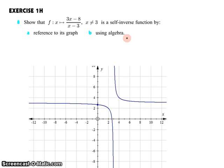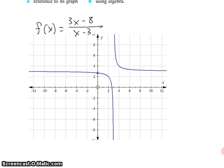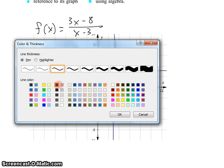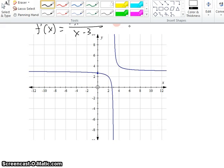So the first thing we'll need to do is graph it, and I've already gone ahead and done that. This is the graph of f(x) = (3x - 8)/(x - 3). And what we can see is that it's symmetrical as it needs to be to be a self-inverse function, and it's symmetrical around the line y equals x.